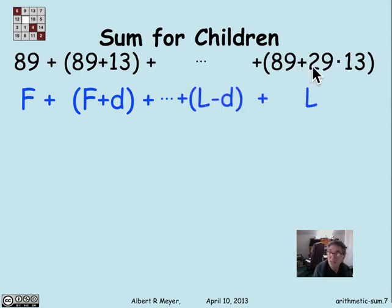Which is 89 plus 29 times 13. This would be l minus d, or 89 plus 28 times 13. And let's call that sum a. We don't know what it is yet, but we're very quickly going to derive it.